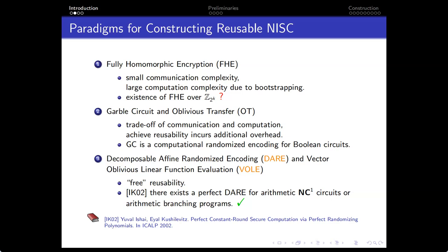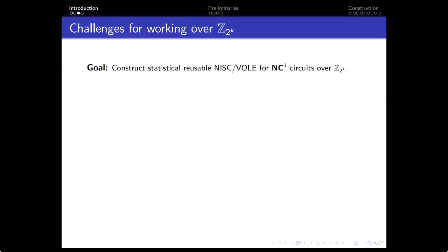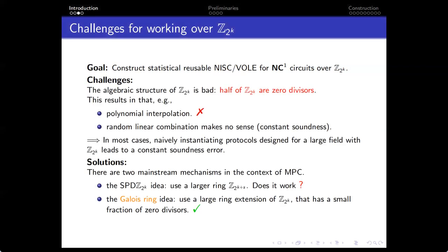This approach has the advantage of achieving reusability. We highly rely on results describing that targeting arithmetic NC1 circuits or arithmetic branching programs is perfectly suited here. Our goal is to construct statistical security for NC1 circuits or arithmetic branching programs over Z_{2^p} in the vole-aided model. The challenges come from the fact that the algebraic structure of Z_{2^p} is bad, where hard elements are zero-divisors. For example, we can only interpolate univariate linear polynomials over Z_{2^p}, and the widely-used random linear combination checker makes no sense.